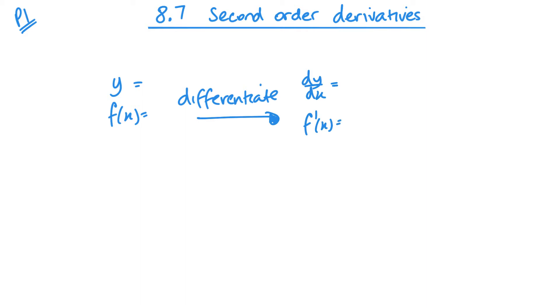Now, if I differentiate a second time, I get the rate of change of the gradient function. And this is written like d2y by dx squared, or two little lines to show that it is the second derivative.